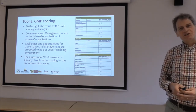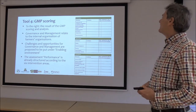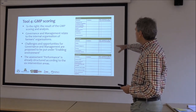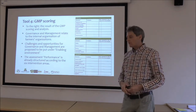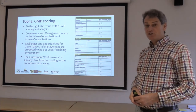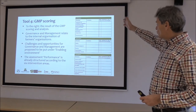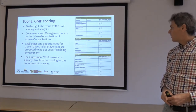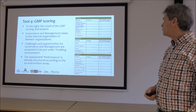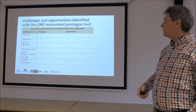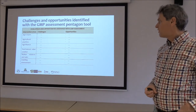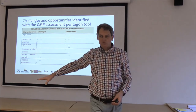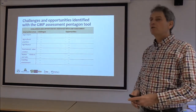The fourth tool is the GMP scoring, focusing on the farmer organization. The output was assessment and scoring according to 16 dimensions, conclusions, and identifying what can or should be done to improve the situation. Here again you have many challenges and opportunities that can be structured according to the intervention areas. For challenges related to governance and management, we propose to put them under enabling environment.